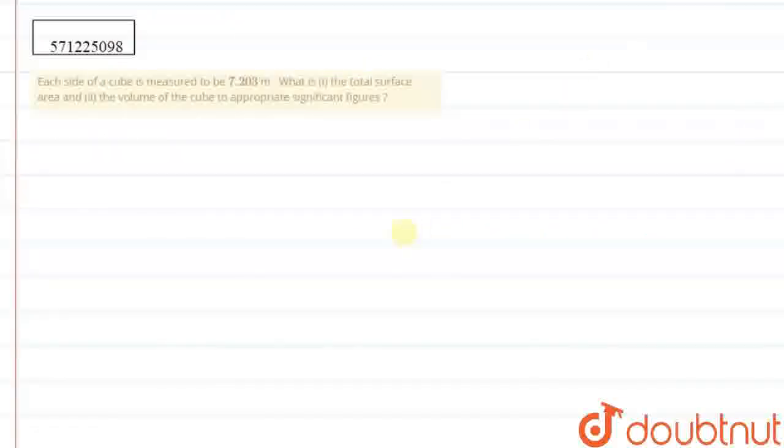Hello everyone, here is the question. The question says each side of a cube is measured to be 7.203 meters. This means the side of the cube is 7.203 meters. Now we have to find what is the total surface area and the volume of the cube to appropriate significant figures.